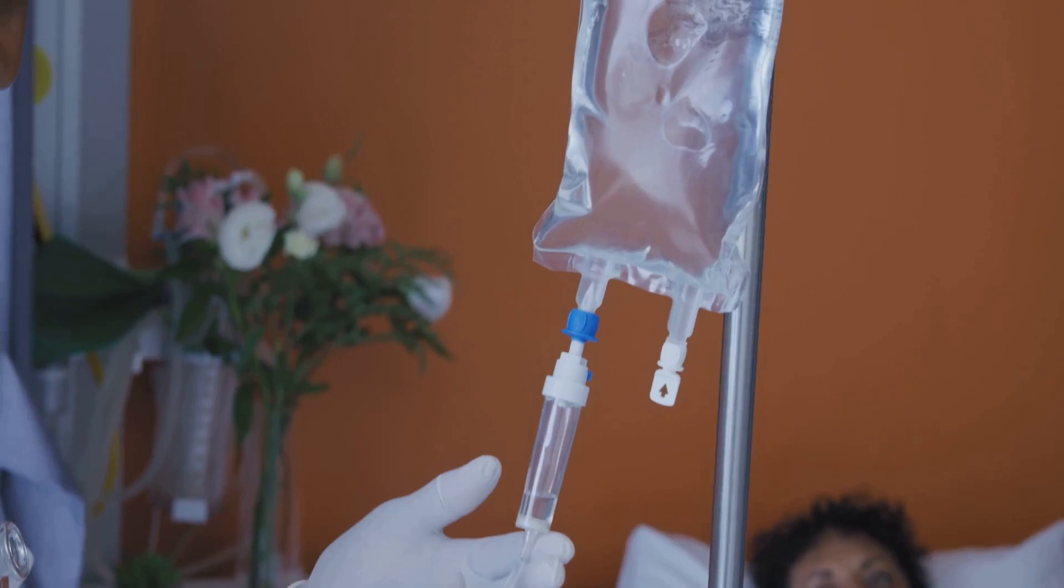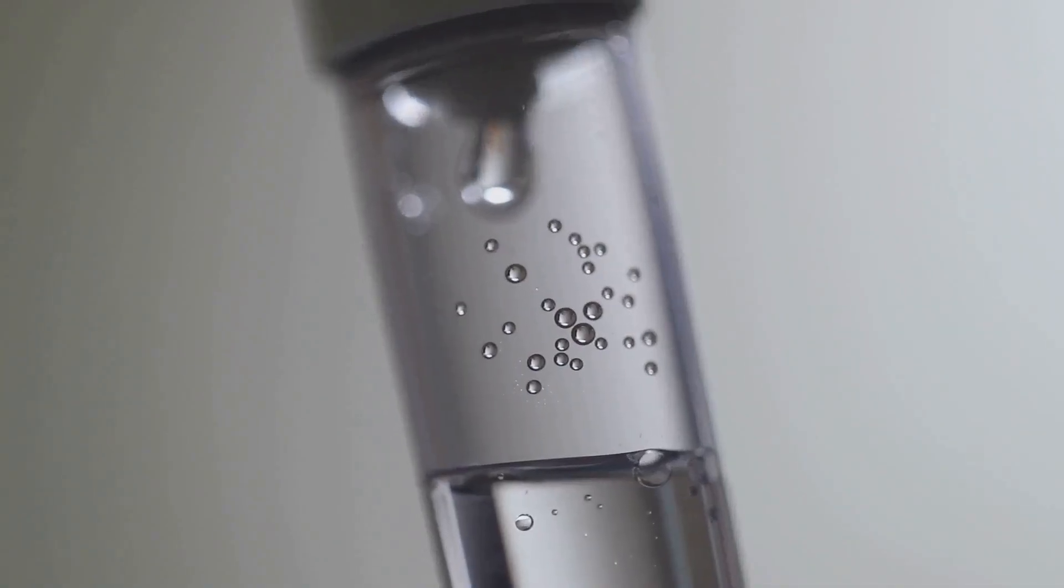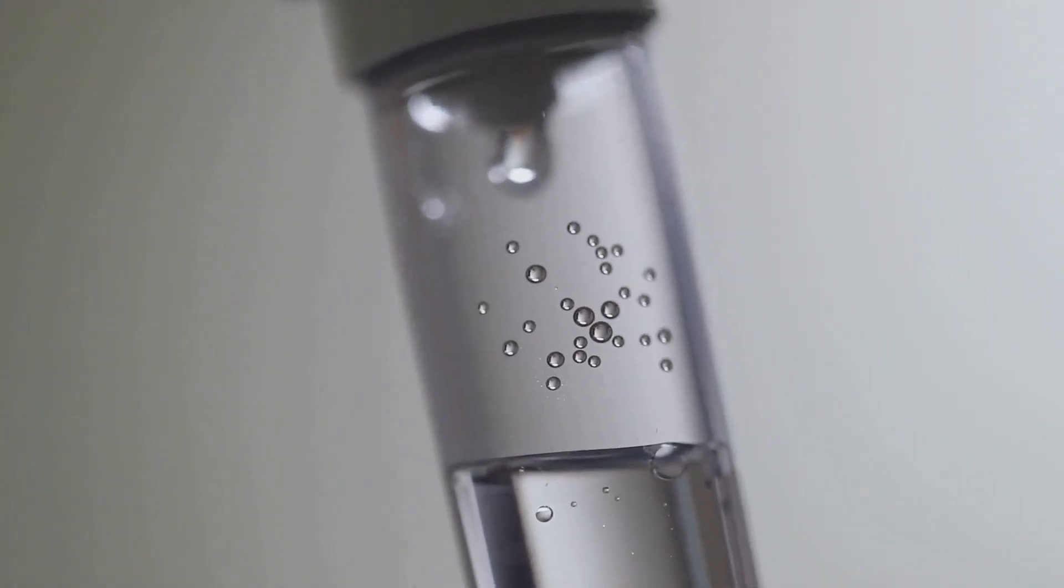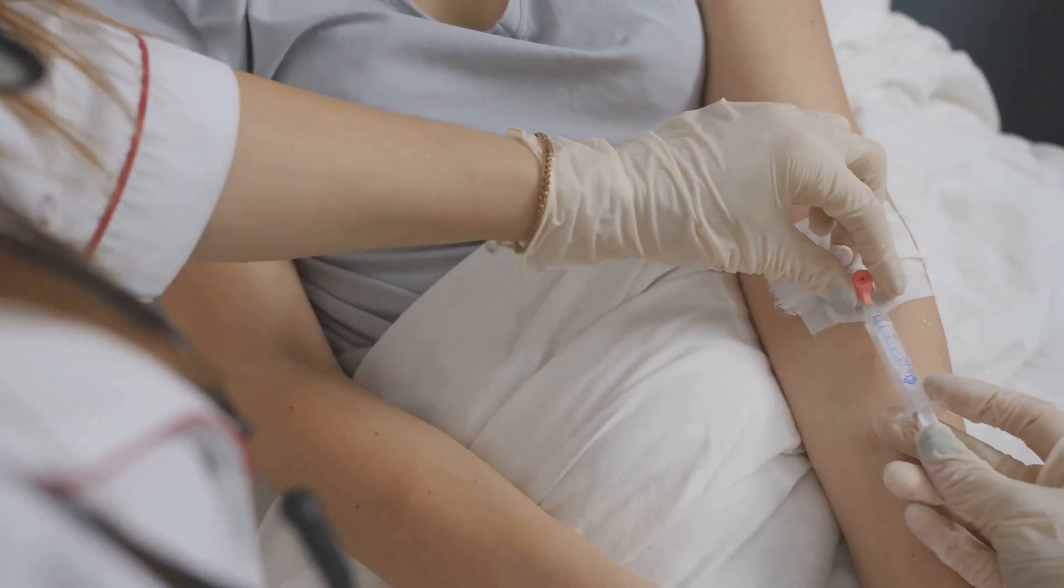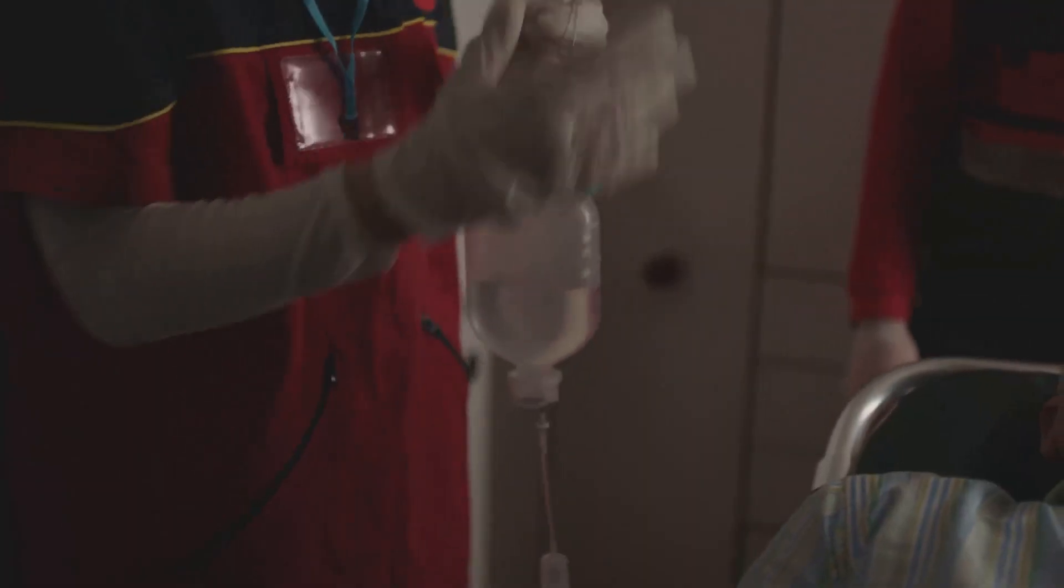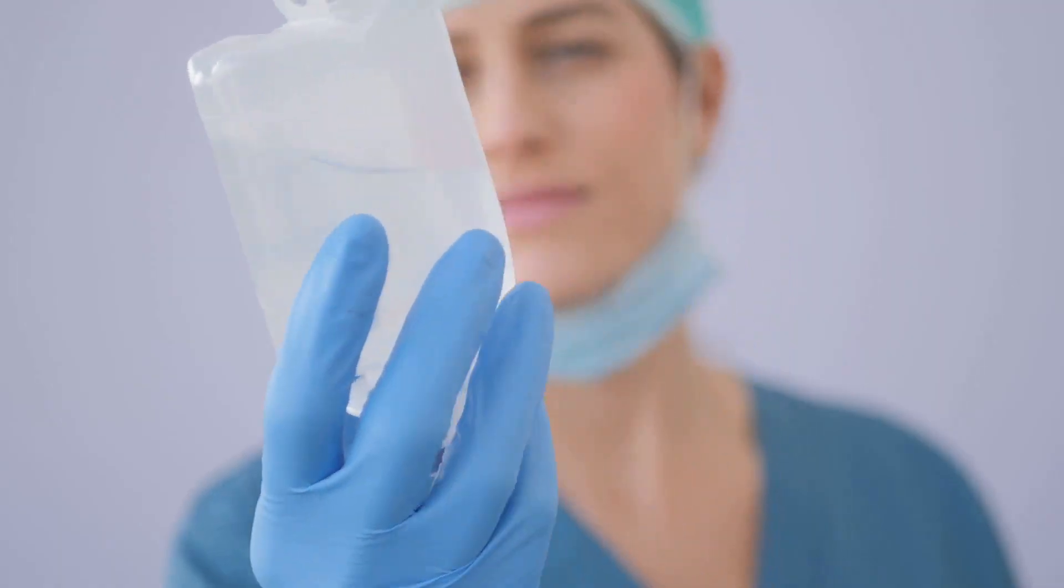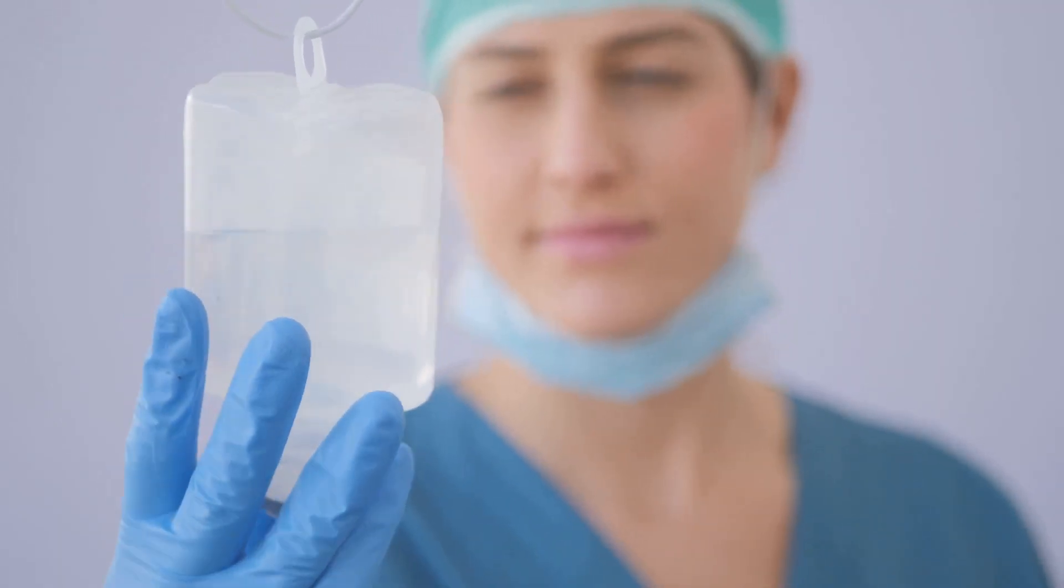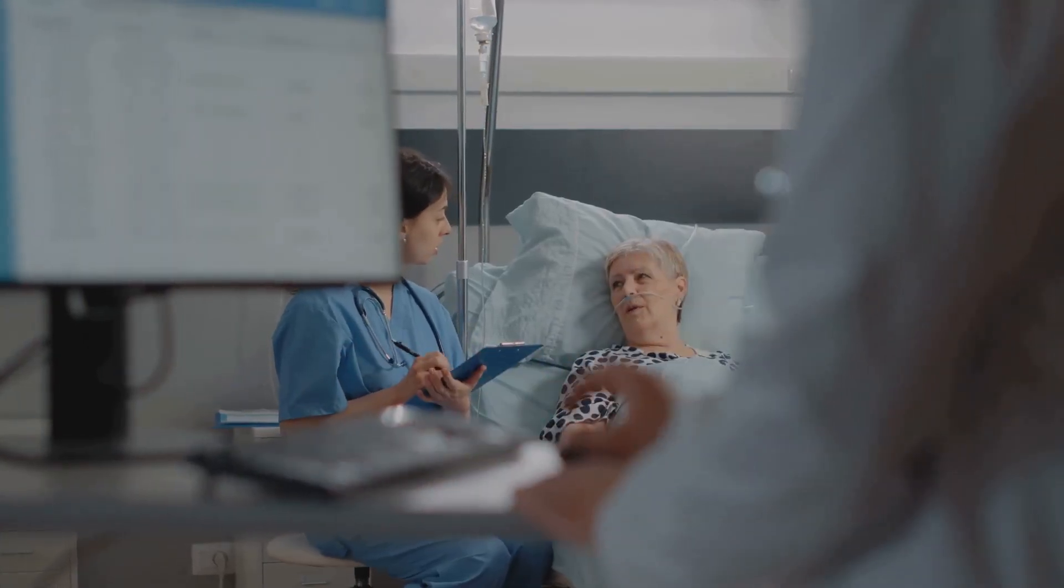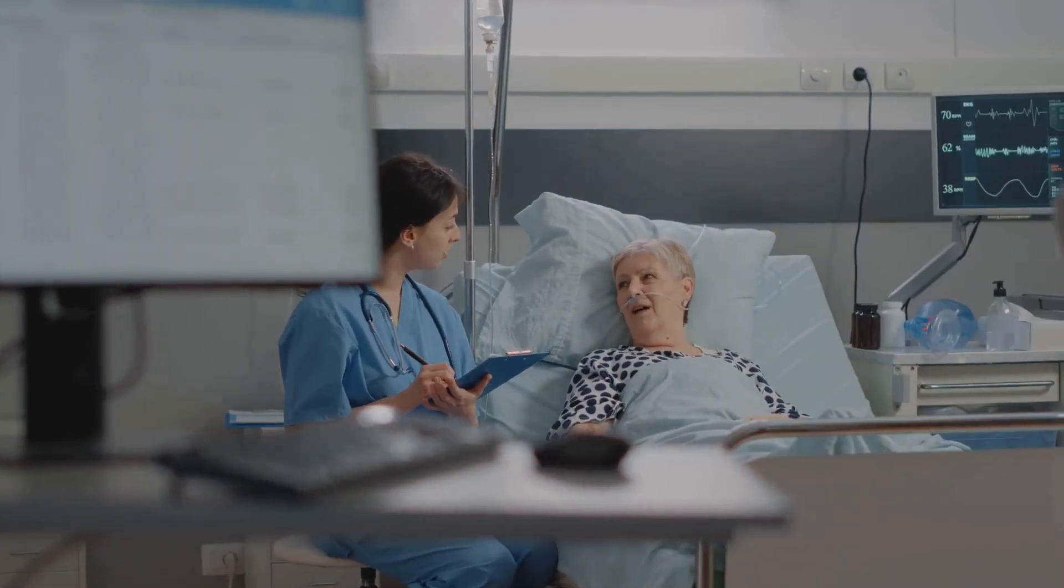Another popular choice is Hartmann's solution, which is similar to normal saline but contains additional electrolytes like potassium and calcium. For patients who need a quick energy boost, we often use dextrose solutions, which contain sugar. And in cases of severe blood loss, colloids like albumin or gelifusine can help to rapidly expand blood volume. Choosing the right fluid depends on the individual patient's needs and the surgical procedure.